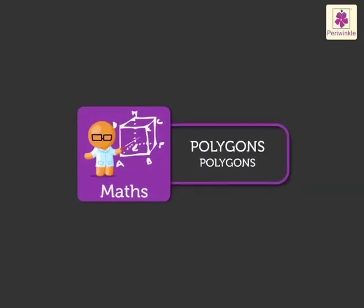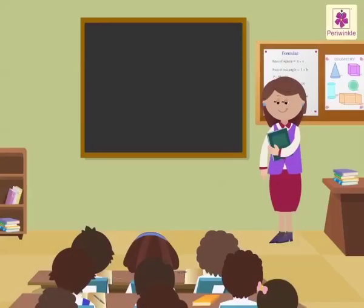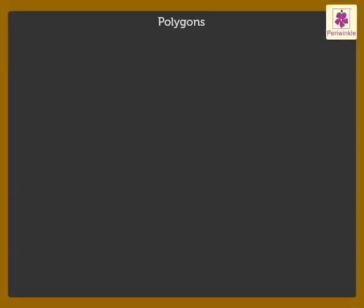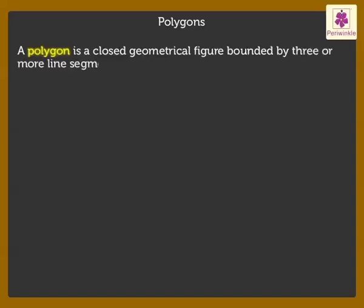Polygons. Hello kids, today let us learn more about polygons. Let's start. We know that a polygon is a closed geometrical figure bounded by three or more line segments.